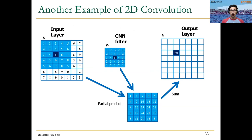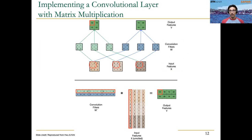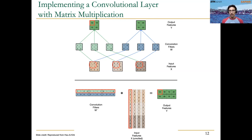We also discussed 2D convolution. We talked about how convolutional layers in CNNs are typically lowered to matrix multiplication in today's GPUs, because GPUs are highly optimized for matrix multiplication and we get the most of the hardware by converting convolutions into matrix multiplications. We discussed briefly this toy example showing how this conversion is done.